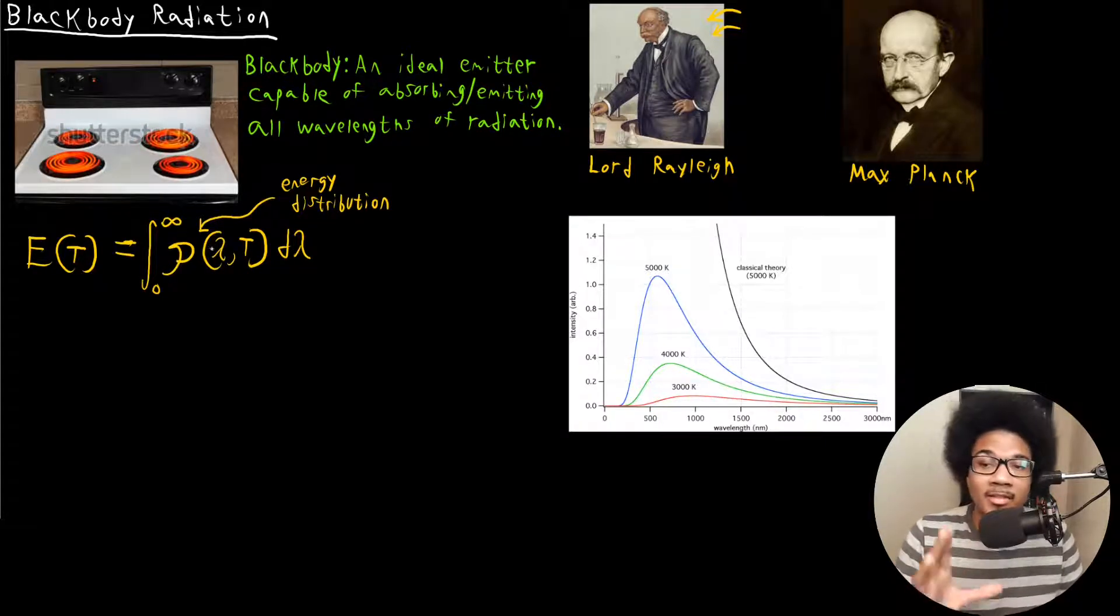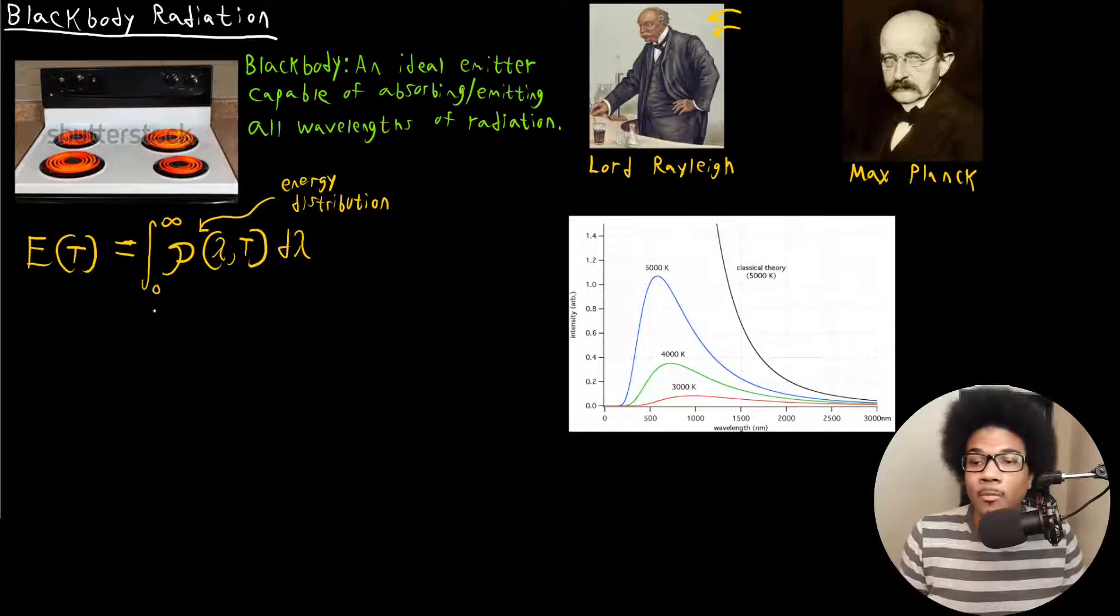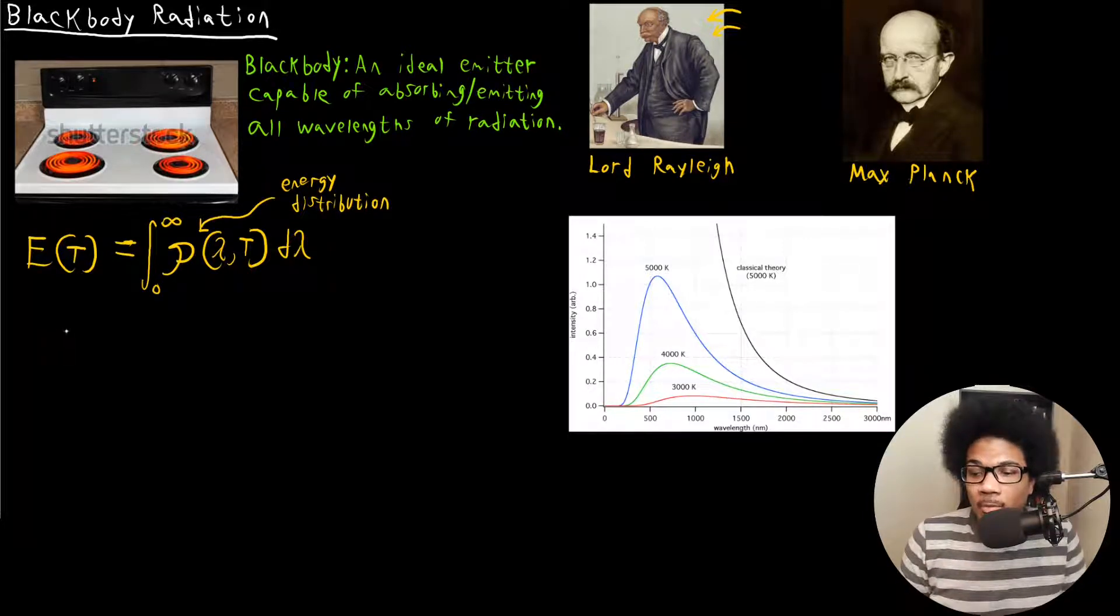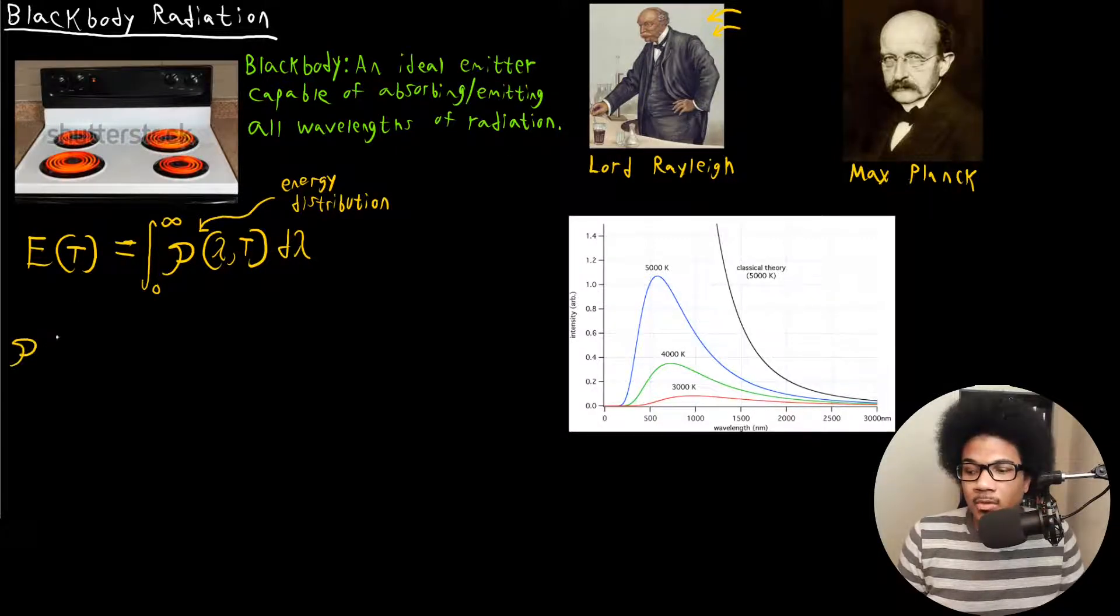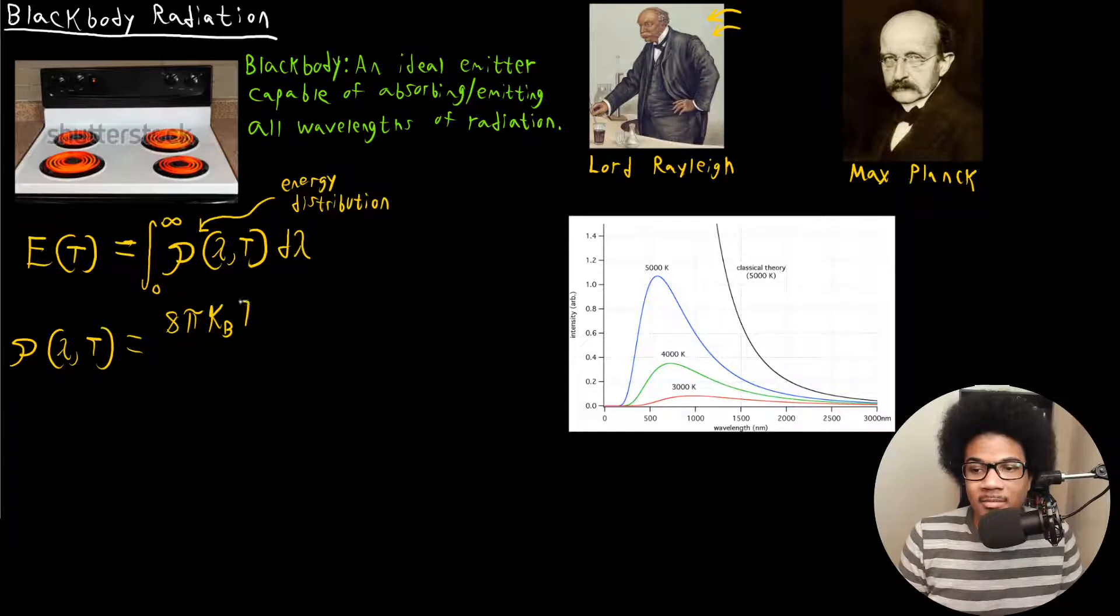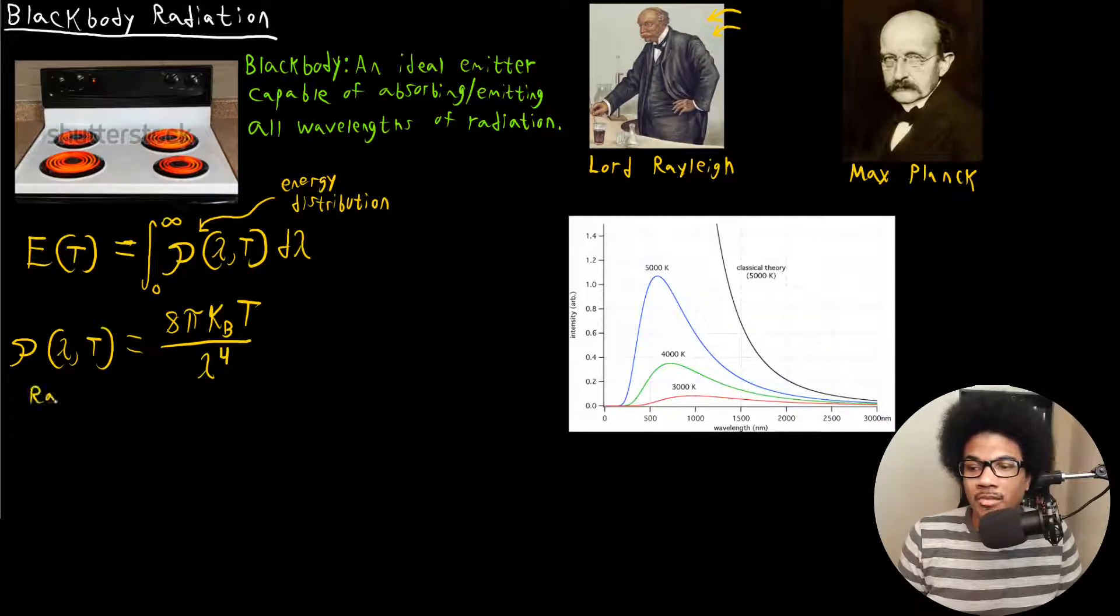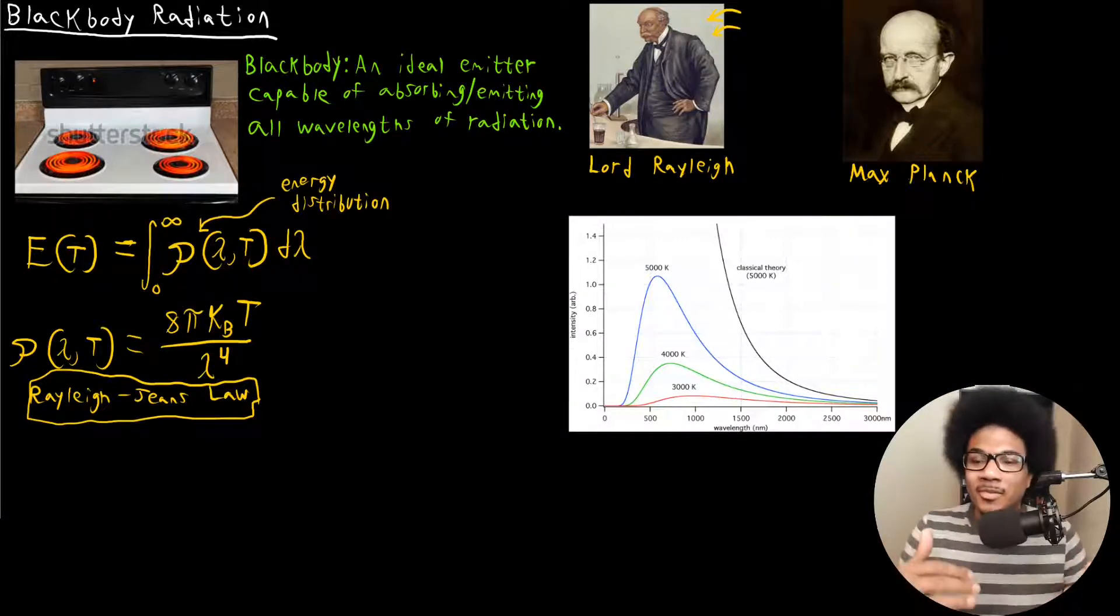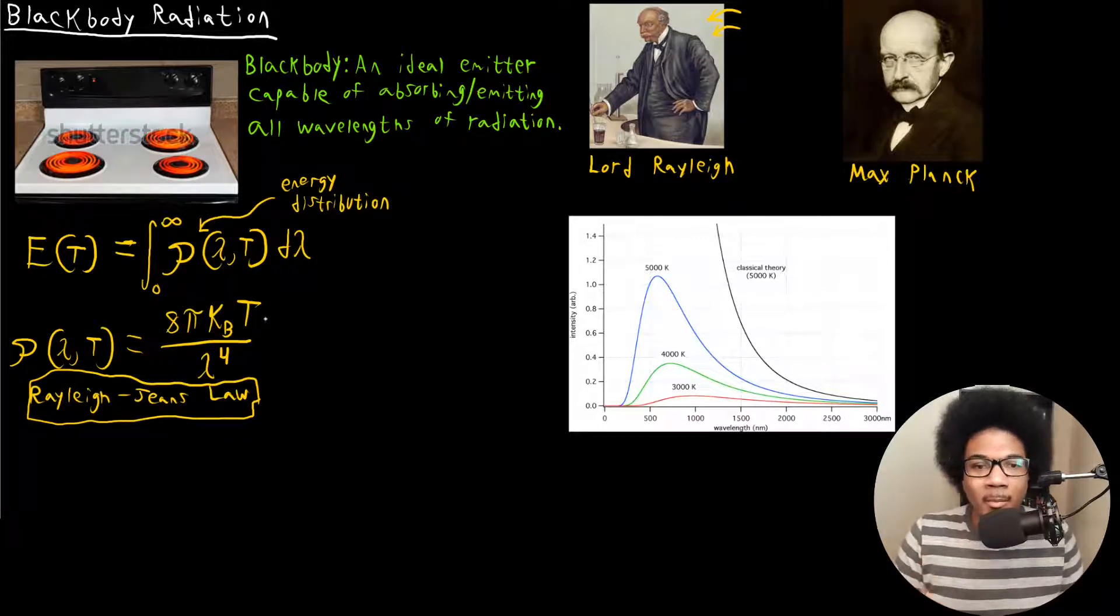I won't go through the details of the derivations of Rayleigh's equation or Planck's equation. I want you to just see the equations and we want to analyze why one works and one doesn't. First, let's look at Lord Rayleigh. His distribution looked like this: you have a distribution that is a function of lambda and T, that's going to be equal to 8 pi KB, where KB is the Boltzmann constant, times temperature over lambda to the fourth power. This is known as the Rayleigh-Jeans law. This distribution was derived from classical mechanics to explain black body radiation.